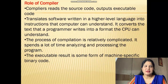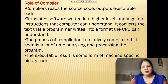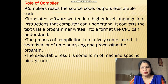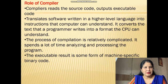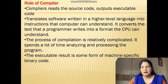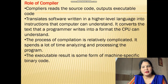Now, the role of the compiler: a compiler reads the source code and outputs executable code. The high level language code is known as the source code. It translates software written in a higher level language into instructions that the computer can understand. It converts the text that a programmer writes into a format that the CPU can understand, translating the programmer's language into machine code which the CPU understands.